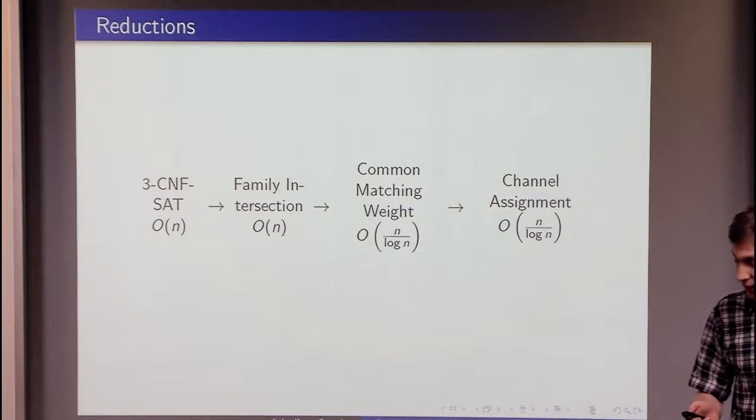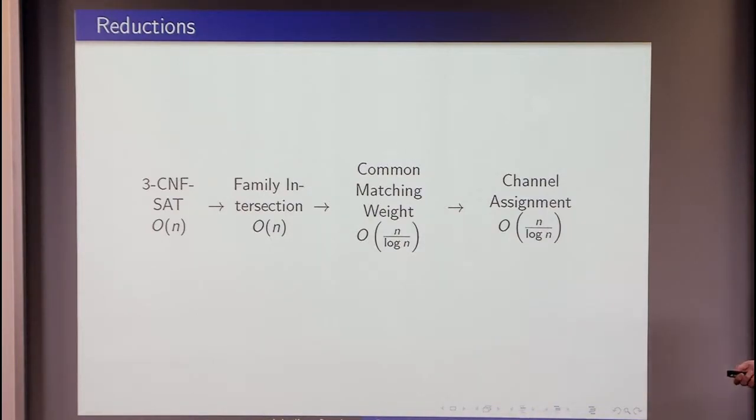We have a tight lower bound for it, which comes from this chain of reductions. The interesting part, the most interesting part, is in the middle here because here we are compressing the size of the instance from a linear to a sub-linear.